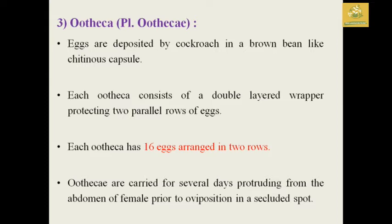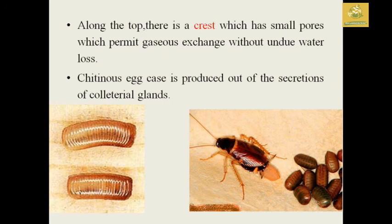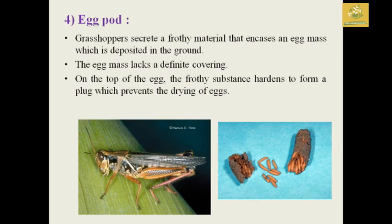Next we have the ootheca, also known as the ootheca family, which are eggs deposited in a chitinous capsule — for example, in the cockroach. They have two parallel rows of eggs with eight eggs each, so sixteen eggs are arranged in two rows. The ootheca is carried for several days attached to the abdomen of the female. At the top there is a crest with small pores used for gaseous exchange without water loss. The egg case is produced from secretions of the collateral glands of the cockroach.